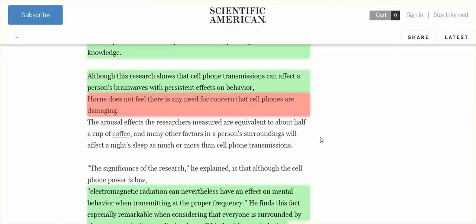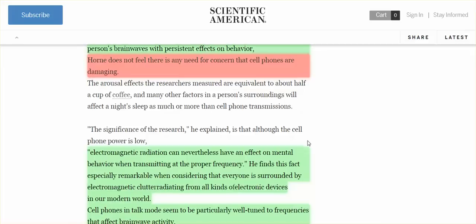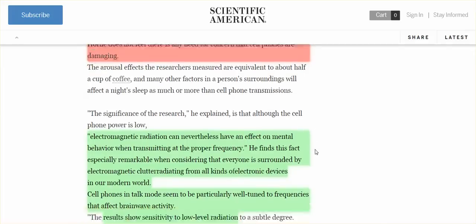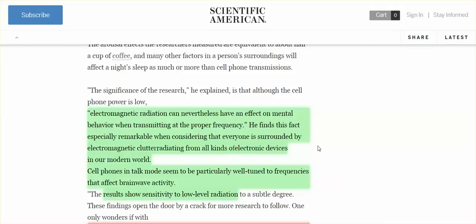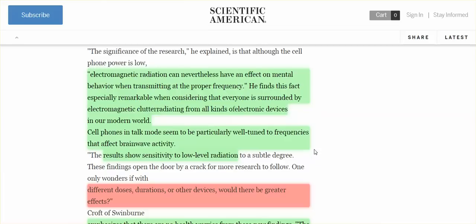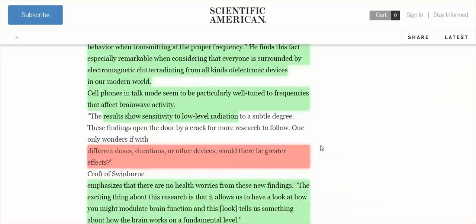The researcher said there's no need for concern that cell phones are damaging. Wow. So they change our behavior but there's no need for concern. Electromagnetic radiation can nevertheless have an effect on mental behavior when transmitting at the proper frequency. This researcher found this fact especially remarkable when considering that everyone is surrounded by electromagnetic clutter radiating from all kinds of electronic devices. Cell phones in talk mode seem to be particularly well tuned to frequencies that affect brain wave activity.